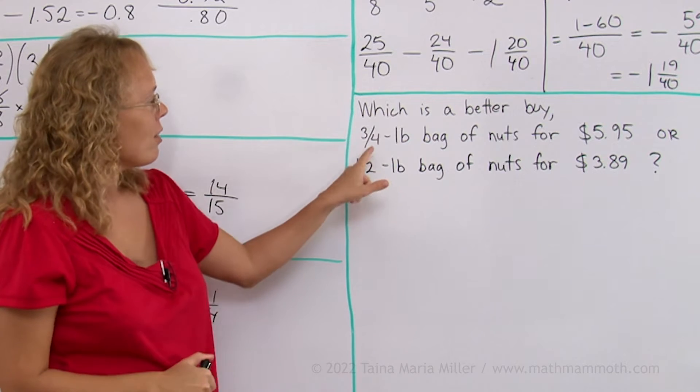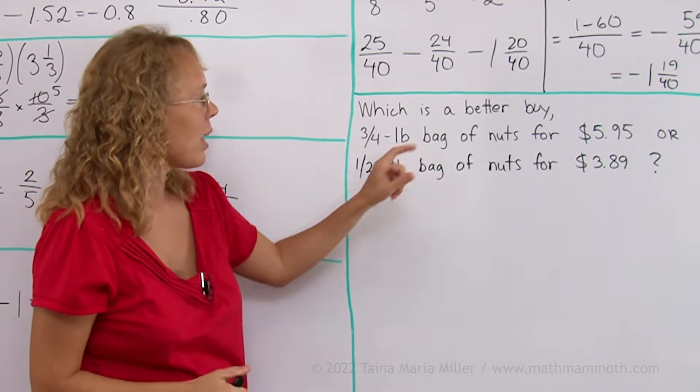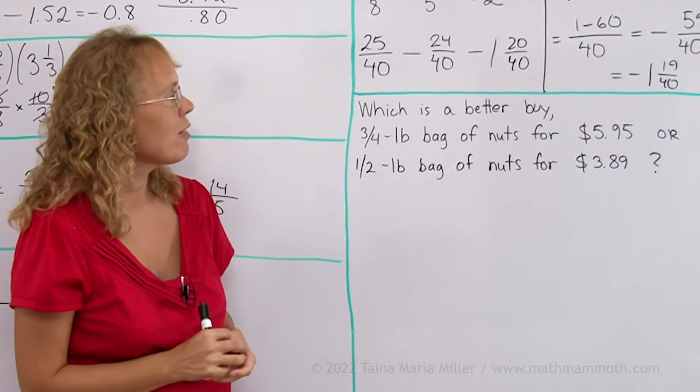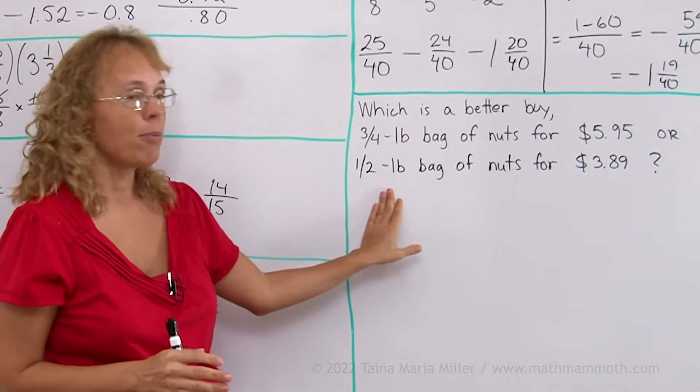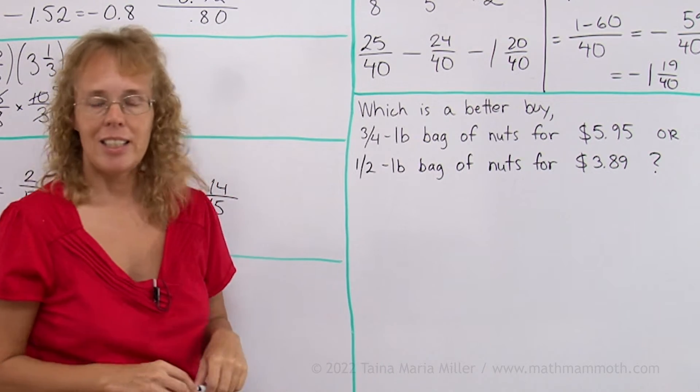Now, which is a better buy? 3/4 of a pound bag of nuts for $5.95 or a 1/2 pound bag of nuts for $3.89.